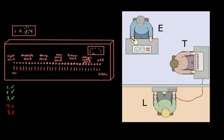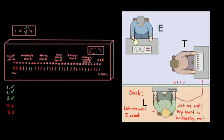However, after several increasing shocks, the learner would start to pound on the wall and cry out in pain. And eventually, they would start to complain about their heart condition, saying things like, let me out, my heart is bothering me, let me out. And as the shocks increased, they would continue to yell and scream that they wanted to quit. And after this, after a certain point, all responses from the learner would cease, and there would only be silence from the other room.